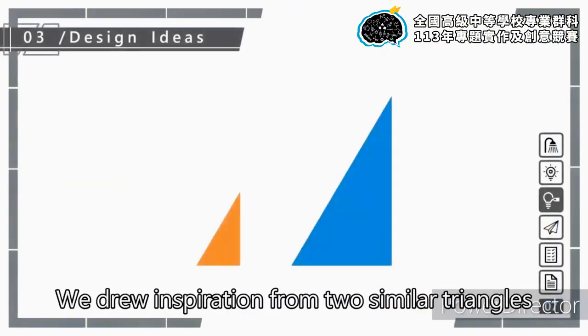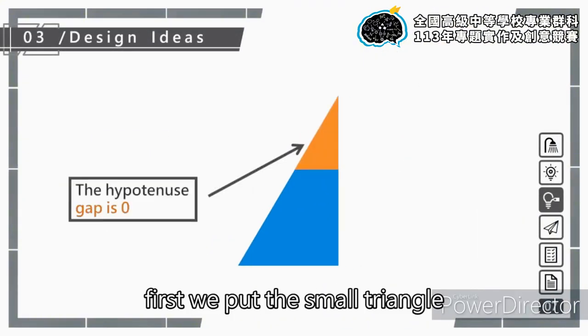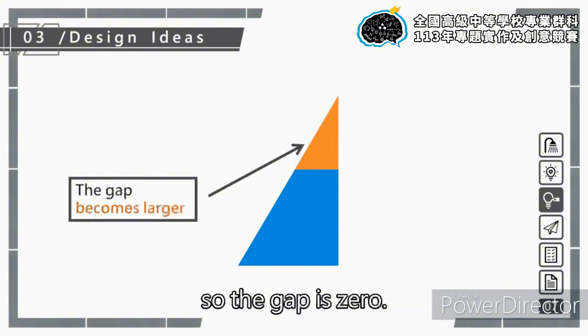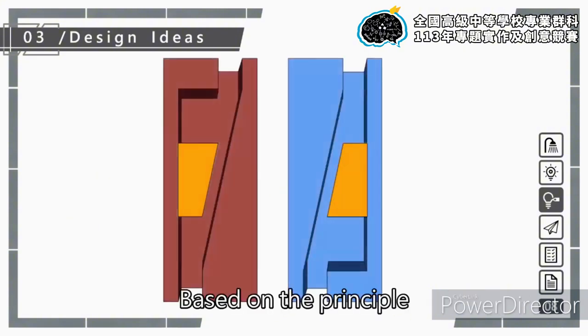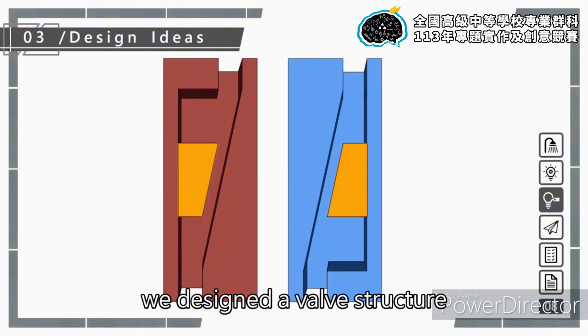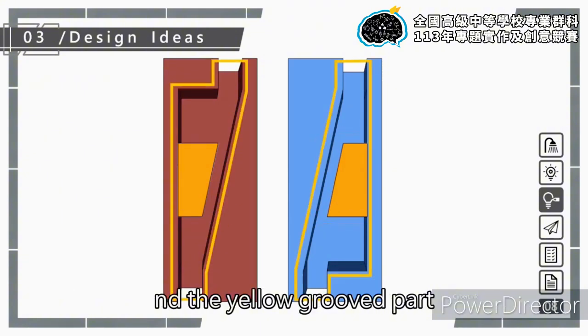Moving on to design ideas, we drew inspiration from two similar triangles. First, we put the small triangle on top of the big triangle, so the gap is zero. When the small one moves down, the gap between two triangles gets bigger. Based on this principle, we designed a valve structure.